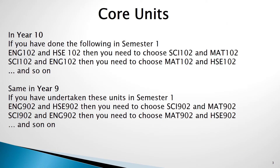For example, in Semester 1, if you did extra units in English and HISI, then you need to choose Science and Maths in Semester 2 while you are undertaking the core units. Whatever you are currently undertaking, you need to pick something else for Semester 2 in the extra core units.